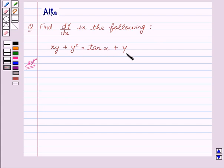So let's start with the solution. The equation is xy plus y squared equals tan x plus y. Now we will differentiate both sides with respect to x.